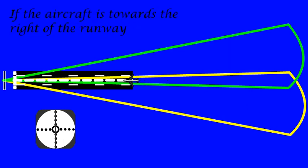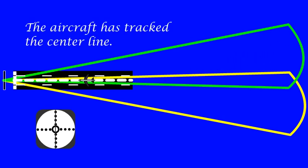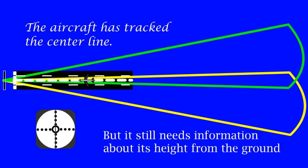If the aircraft is towards the right of the runway, indications would be like this. But it still needs information about its height from the ground, which is given by the glide slope.